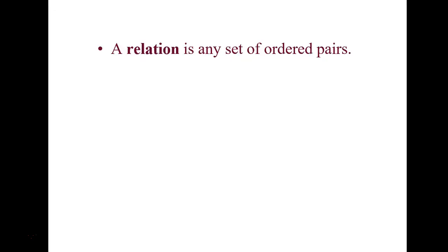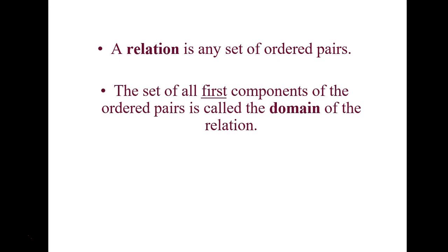We start off with a few definitions. First is a relation. If you hear the word relation mentioned in math, we're talking about basically any set of ordered pairs. They may be given to you in a table, as an x-y pair, or in a graph — but any set of ordered pairs that relate an input and an output is a relation. The first component, usually your x values, is called your domain.